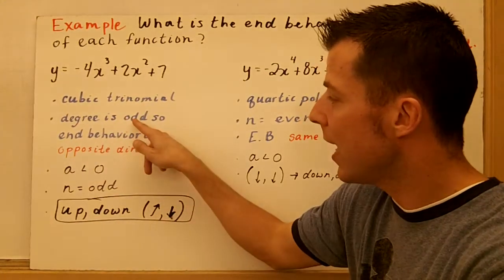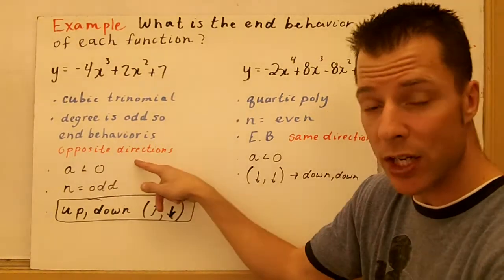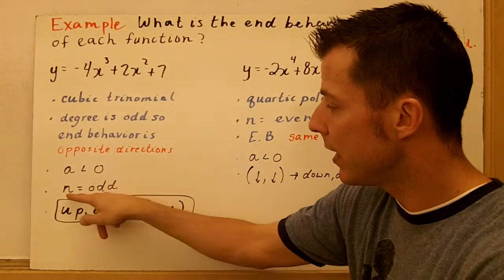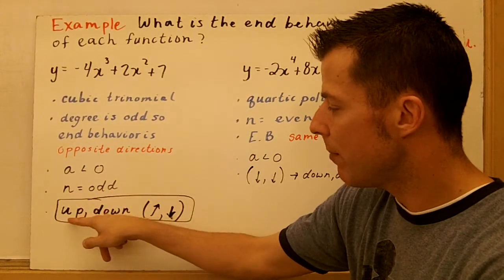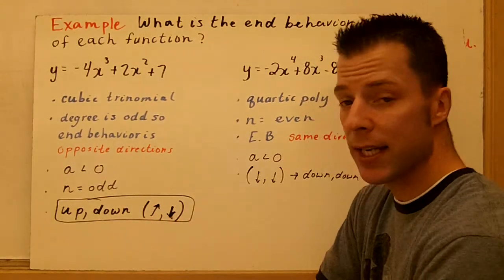Cubic, degree is odd, so the end behaviors have to be opposite directions. I know that. But a is less than zero, and the degree is odd, so that's up-down, or up-down there. So that's the end behavior.